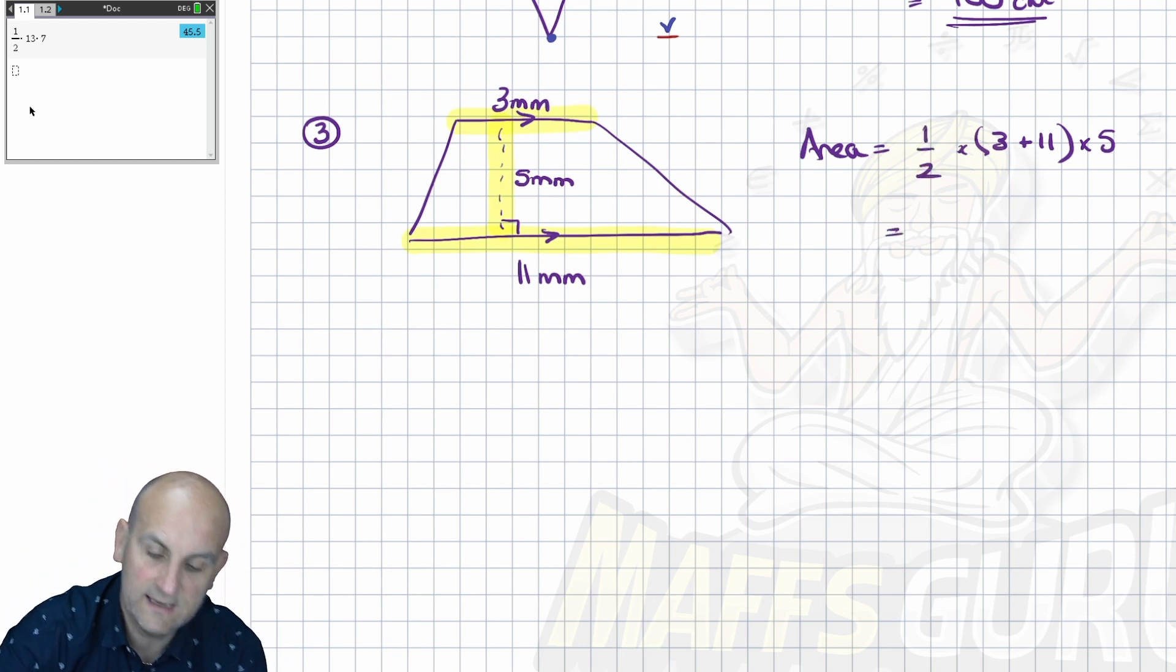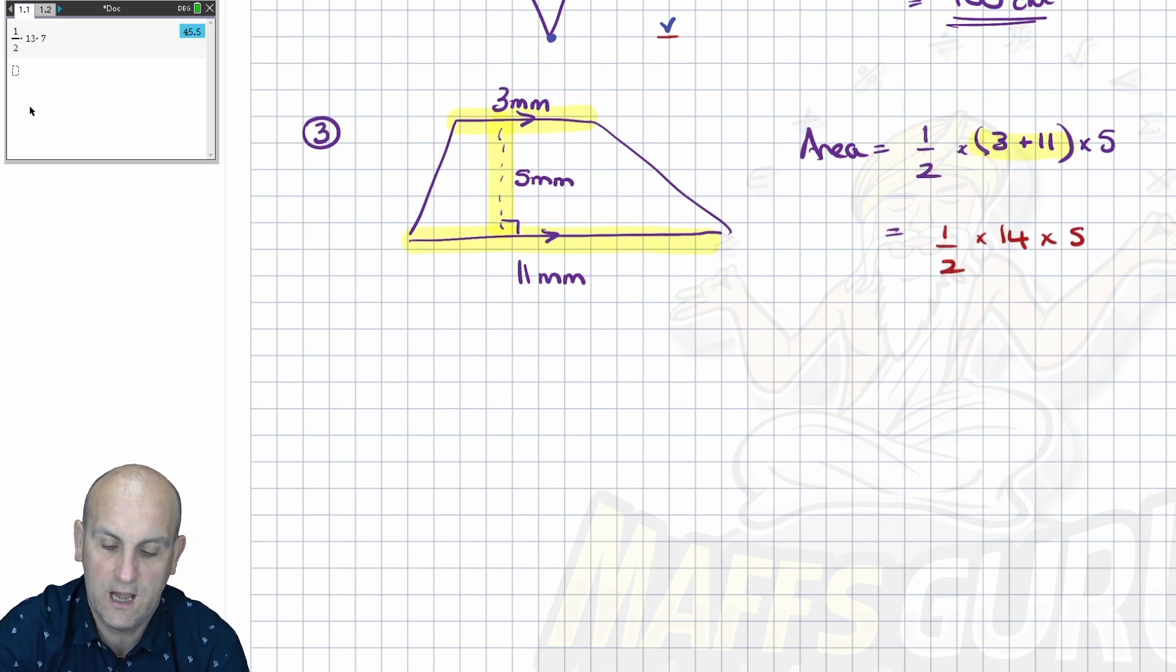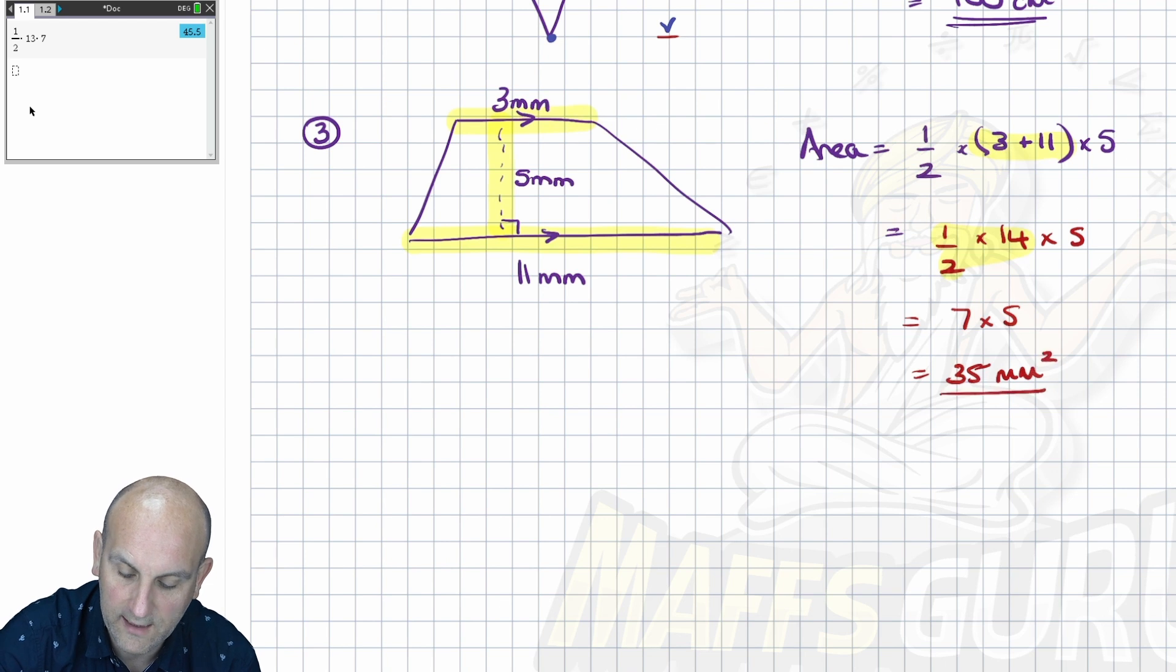So having written down that, I have to do it in order. So bid math says brackets first. So 3 plus 11 is 14. And then I just write down all the rest of it. I don't try and rush this. I'm not in any hurry and I get marks for working out. A half times 14 is seven. And seven times five is 35. And our units are millimeters squared.